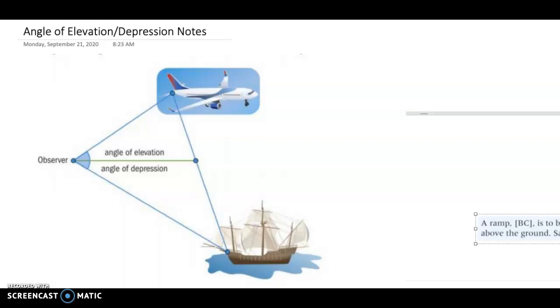Alright guys, so we're going to start using these trigonometric identities that we just got done learning in 1.5. So 1.6 is all about angle of elevation and depression.